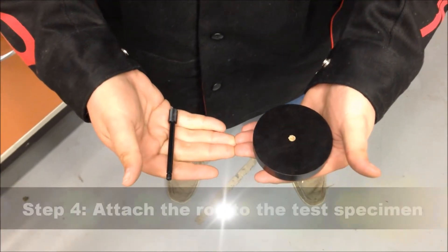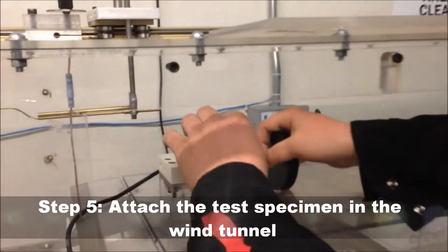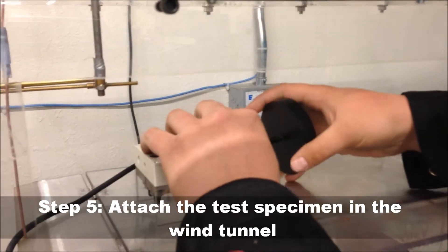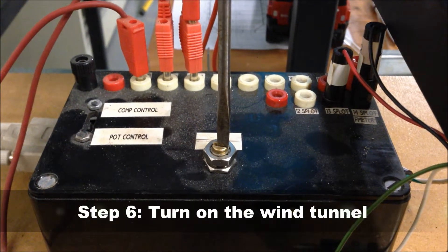Attach the test specimen to the testing rod by gently screwing in the test piece. Insert the testing rod into the wind tunnel at this location. To power on the wind tunnel, take a flathead screwdriver and turn counter-clockwise.